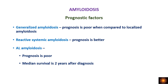Regarding prognostic factors: generalized amyloidosis has a poor prognosis compared to localized amyloidosis. Reactive systemic amyloidosis has a somewhat better prognosis. AL amyloidosis has a poor prognosis compared to other types, with a median survival of two years after diagnosis.